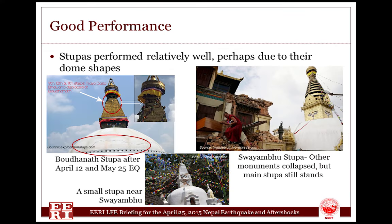Buddhist stupas performed relatively well, perhaps due to the dome shape. There were small cracks in the main dome, and the 9th, 10th, and 11th steps were displaced slightly. The displacement was small in the April 12th earthquake but got larger in the May 25th earthquake. The restoration is almost complete now. Many monuments in Swoembu Monument Zone built on pagoda and Sikhara tiles got collapsed or partially damaged, but the main stupa of Swoembu was not damaged. Other small or big stupas in Kathmandu Valley show some damages on the top step portion, but the main dome of the stupa has remained intact.